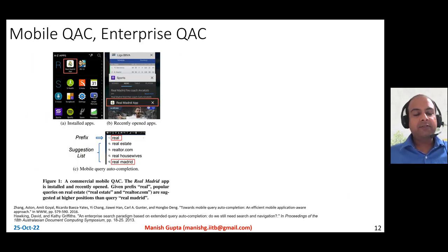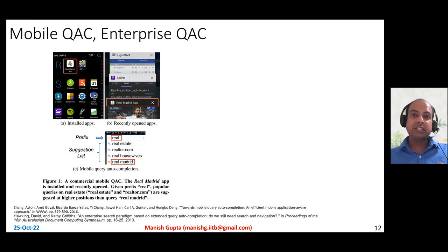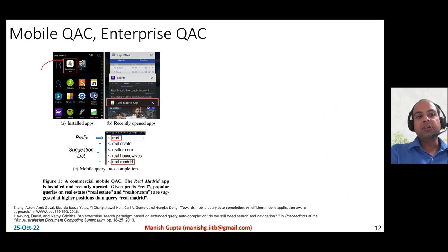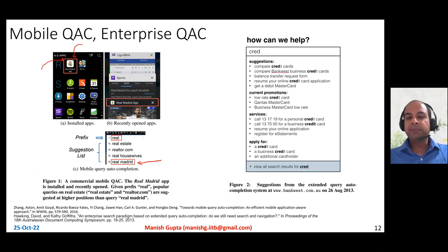Let me talk about autosuggest from the perspective of different endpoints. Typically people think about web search, but autosuggest is present on many portals — desktop search, mobile search, enterprise systems like intra-company search or Yammer search. Autosuggest on all of those systems has to be slightly different. For example, on mobile you could make use of information about installed apps — if the user recently installed the Real Madrid app and typed 'RE', you know they may be more interested in 'Real Madrid' as a suggestion.